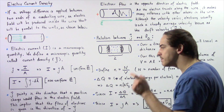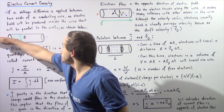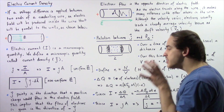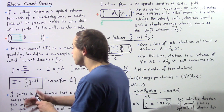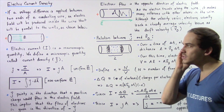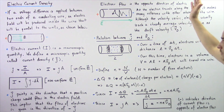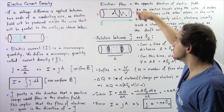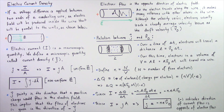Now j points in the direction that a positive charge would flow within our electric field. So in this case, our current density would point in the direction of the electric field, which implies that the flow of electrons is given in the direction of negative current density. So our electric current flows in one direction and the electrons flow in the opposite direction. Now as electrons travel through our conducting wire, they make many collisions with other atoms and molecules found within our wire.